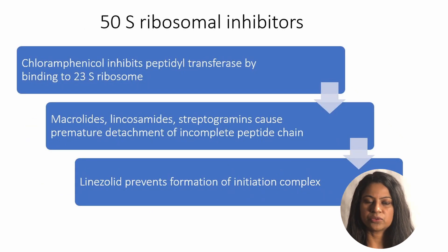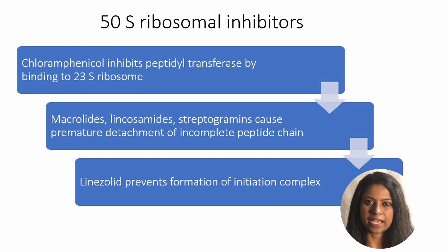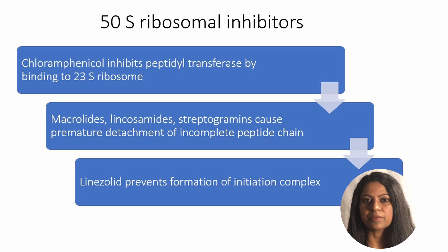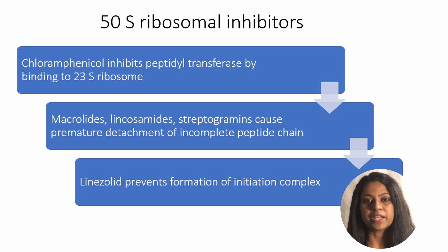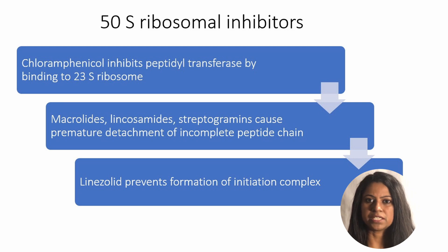Chloramphenicol binds to and inhibits the 23S ribosomal subunit of the 50S ribosome, inhibiting peptidyl transferase activity. It also inhibits the binding of tRNA to the A site. Macrolides like erythromycin, lincosamides like clindamycin, and streptogramins like quinupristin and dalfopristin inhibit protein synthesis by causing premature detachment of the incomplete peptide chain. Linezolid prevents the formation of the initiation complex for protein synthesis.